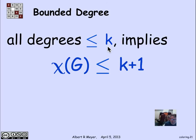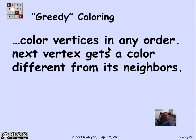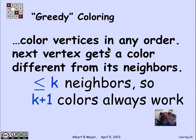There's an easy argument showing that if every vertex in a graph has degree at most k, then the graph is (k+1)-colorable. The proof is constructive: color vertices one at a time, ensuring each vertex gets a color different from its already-colored neighbors. Since any vertex has at most k neighbors, there are at most k forbidden colors, so a (k+1)th color is always available.